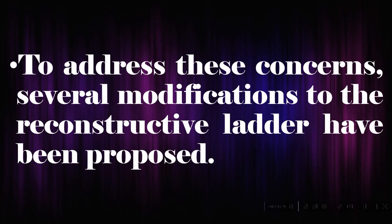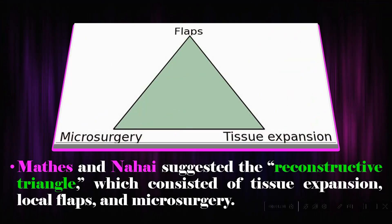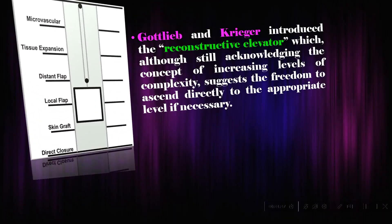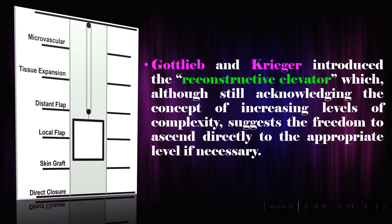To address these concerns, several modifications to the reconstructive ladder have been proposed. Mathis and Nahai suggested the reconstructive triangle, which consisted of tissue expansion, local flaps, and microsurgery. Gottlieb and Krieger introduced the reconstructive elevator, which, although still acknowledging the concept of increasing levels of complexity, suggests the freedom to ascend directly to the appropriate level if necessary.